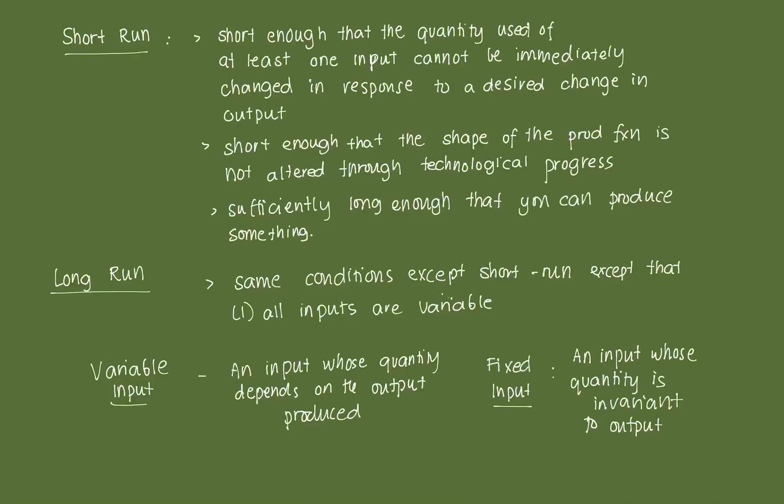There are two types of inputs by use. The first is a variable input, whose quantity depends on the output produced. In our bakery example, variable inputs could be flour, salt, sugar — things that change as production changes. For example, to produce one loaf of bread you need one gram of flour; to produce two loaves, you need two grams. So the quantity of flour used changes as the quantity of production changes.